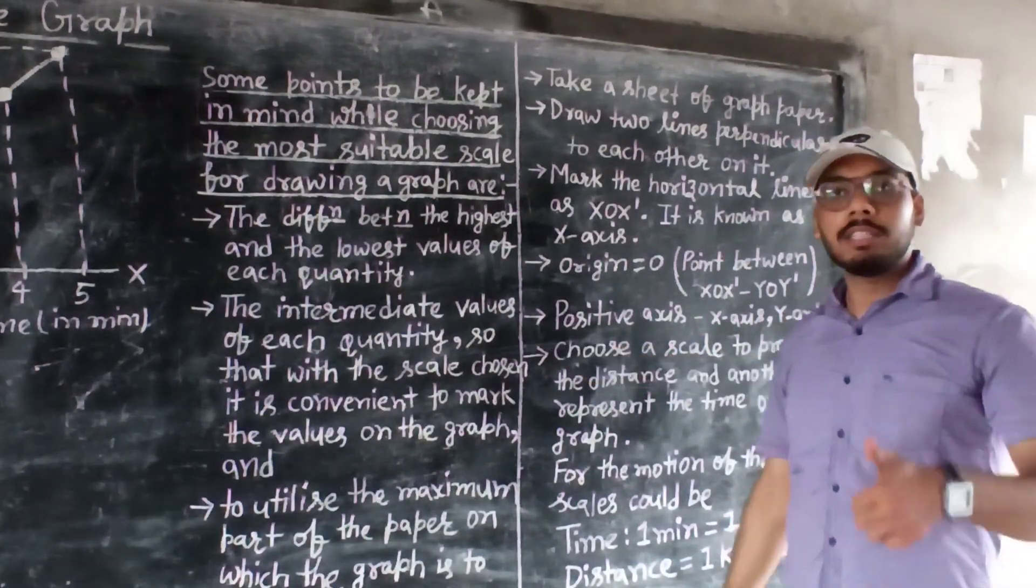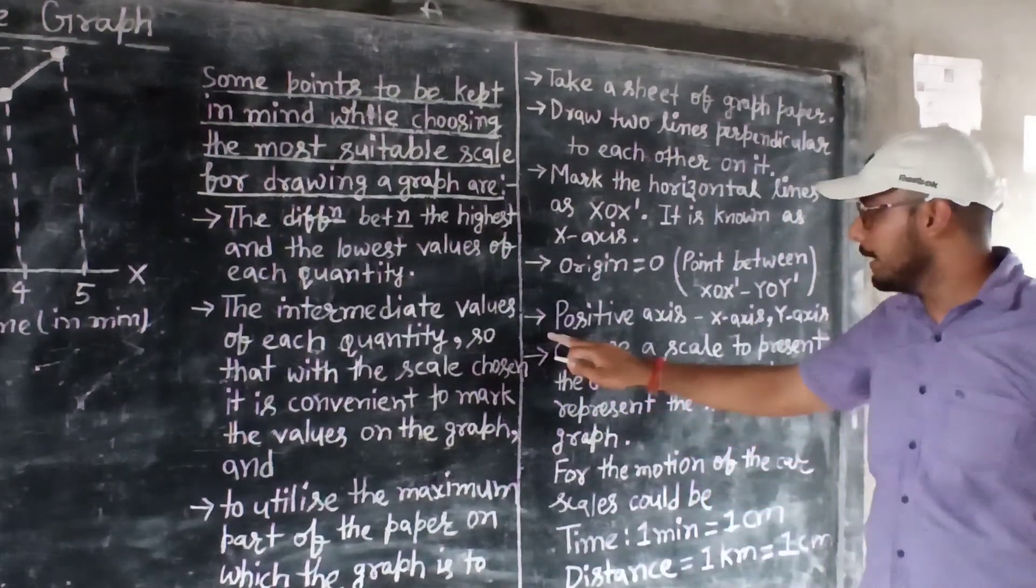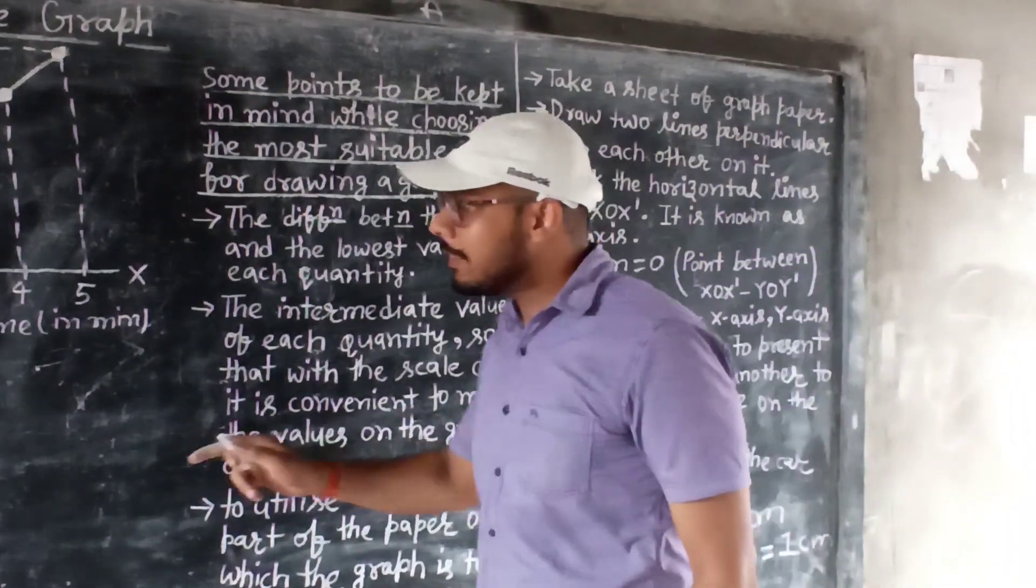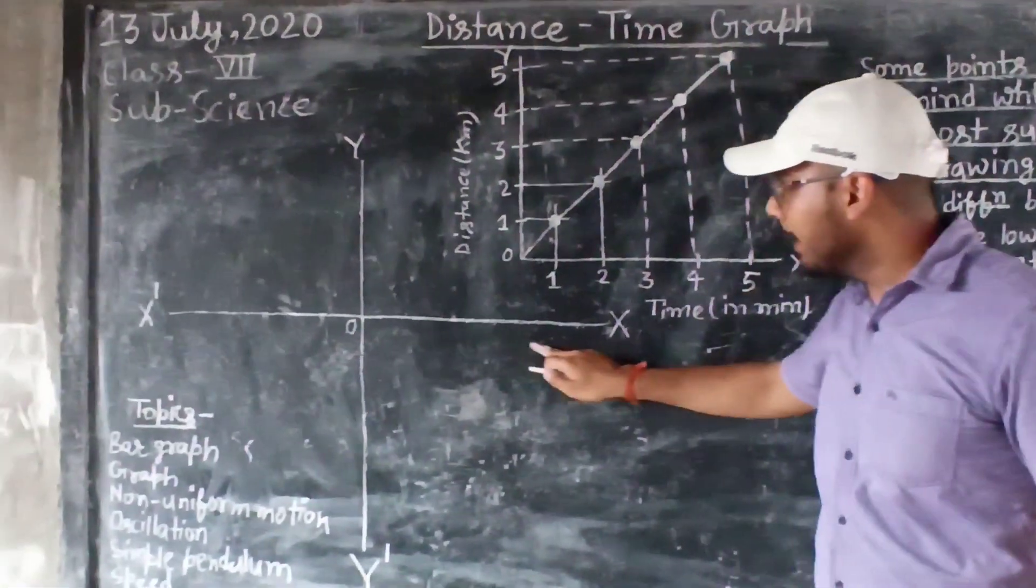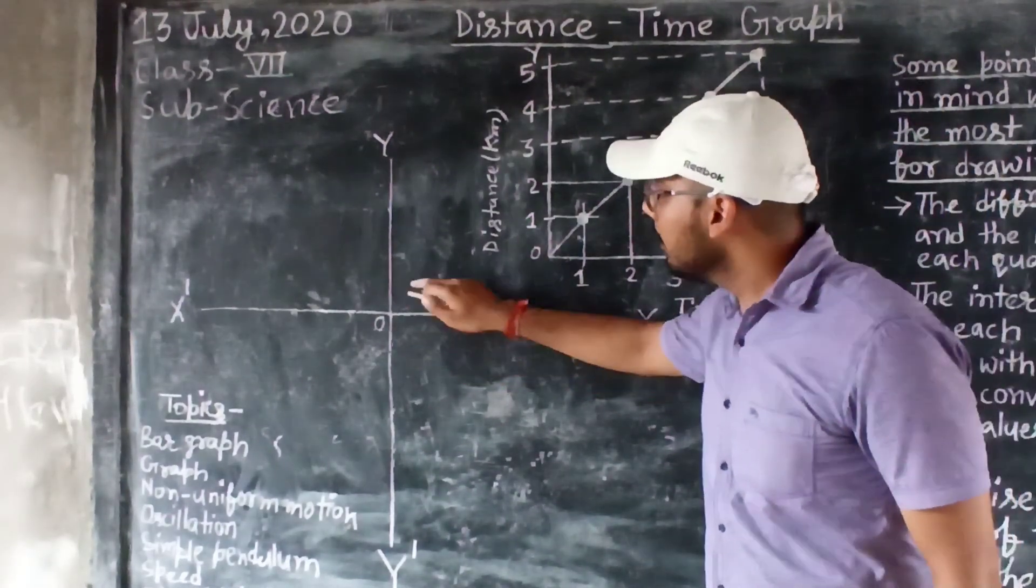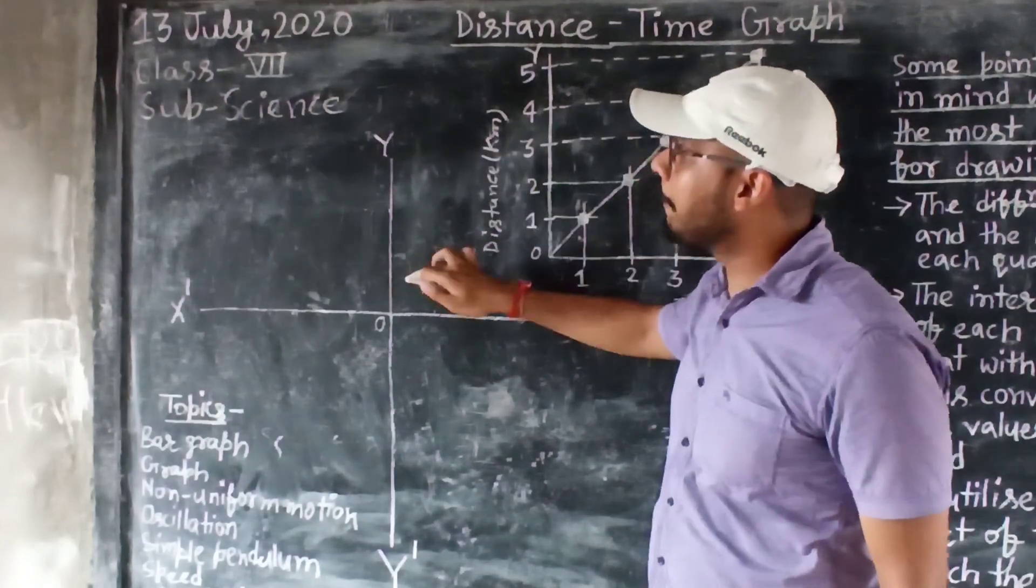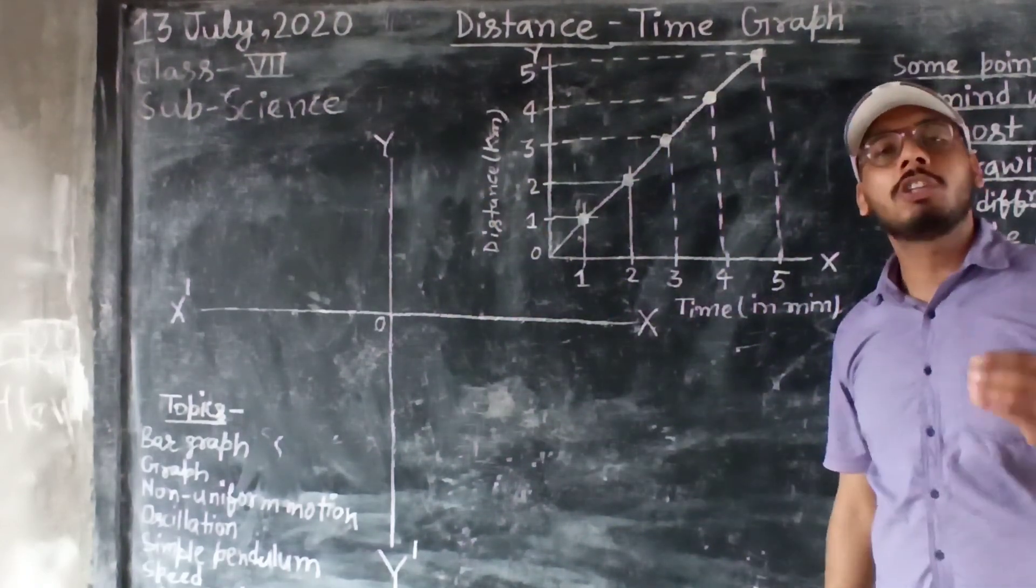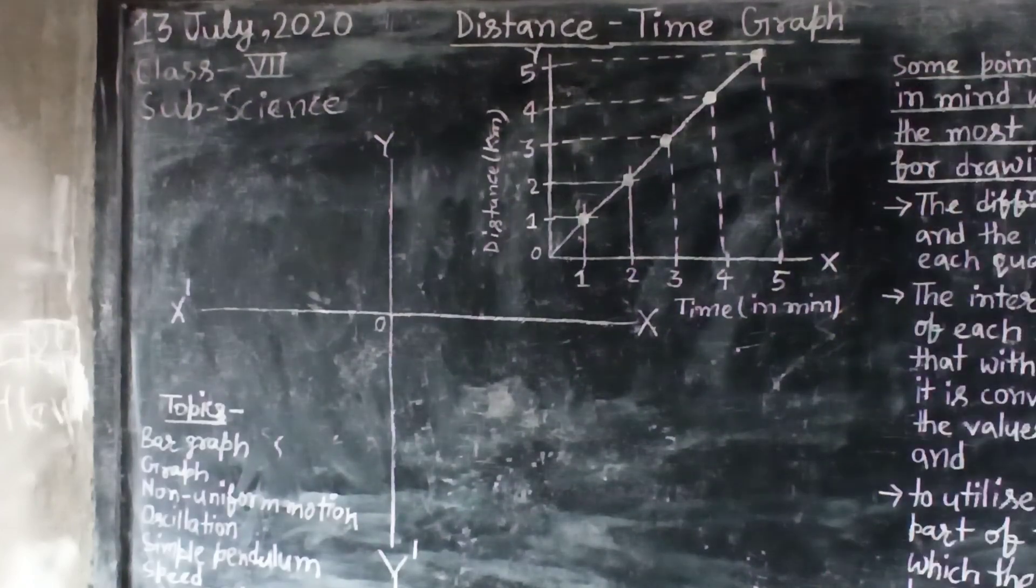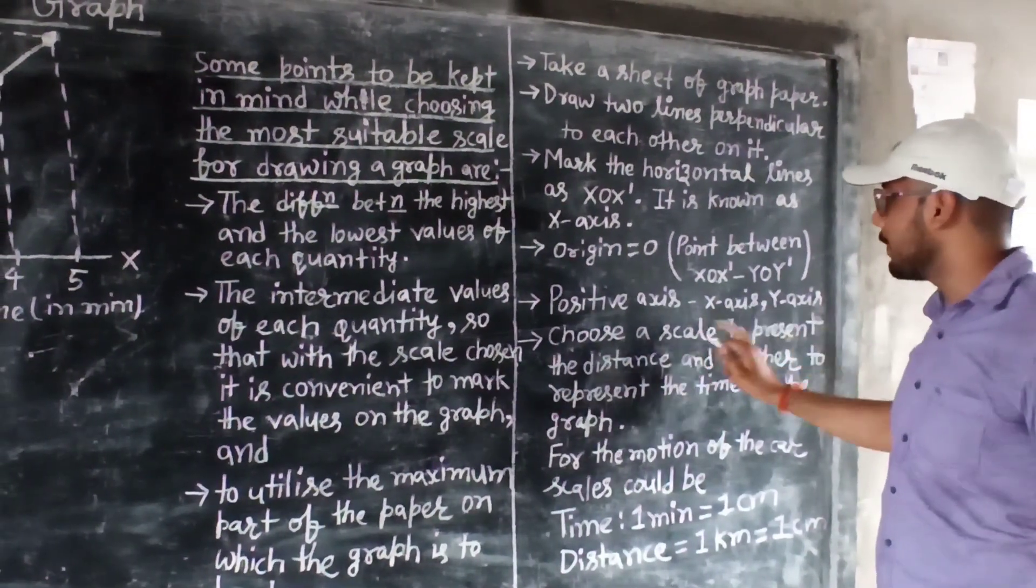And the first and the most important thing that I want to tell you, it is positive axis. So what is that positive axis? Whatever you see, this side it gives the value of positive. And this, it gives the positive value. So in this chapter, we will study only about the positive number, the positive value. That's why the positive axis, X axis and Y axis.